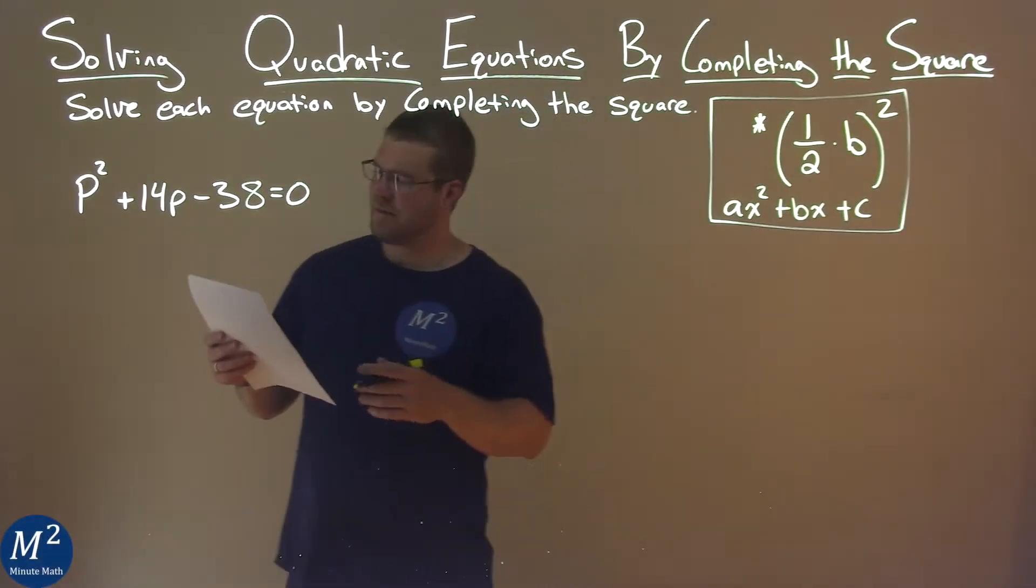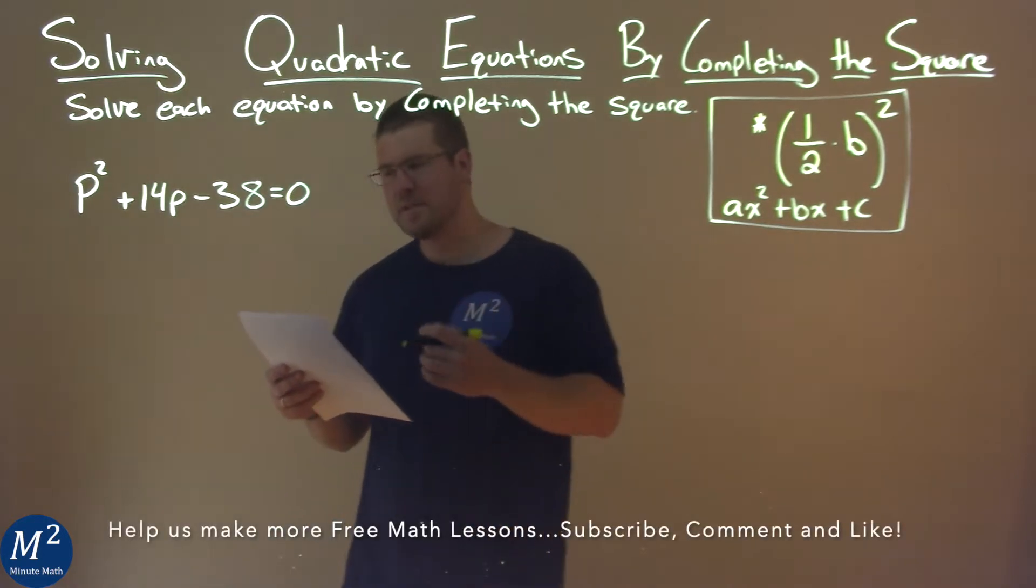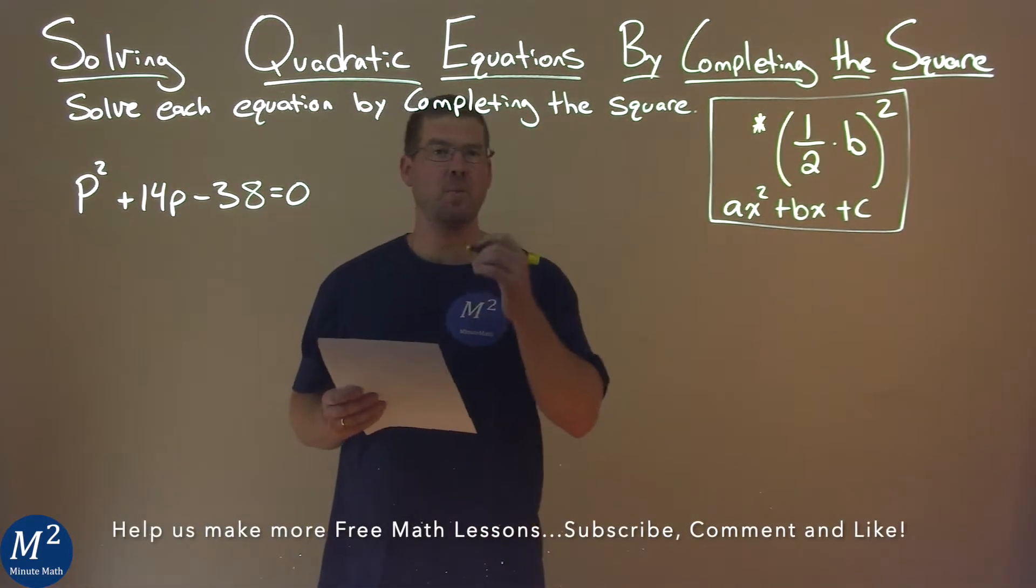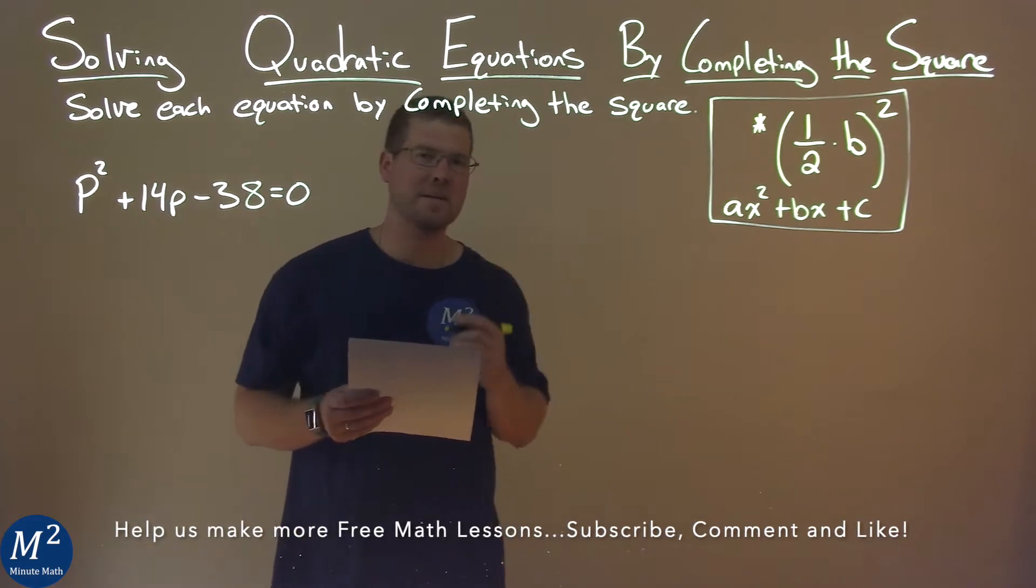We're given this problem right here, p squared plus 14p minus 38 equals zero, and we need to solve this by completing the square.